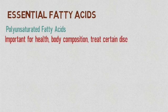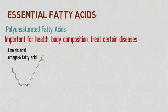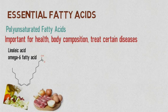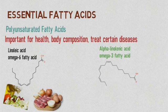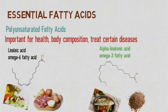First we have linoleic acid, which is an omega-6 fatty acid found mainly in vegetable oils, also in nuts, meat, and eggs. Next we have alpha-linolenic acid, which is an omega-3 fatty acid found mainly in seeds such as chia and flax, fish, and other seafoods.